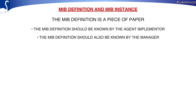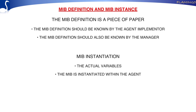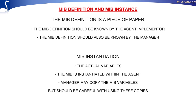The second term is the MIB instantiation — those are the actual variables. It's not the definition, but the thing that has values. The MIB instantiation is only available within the managed system, not in the manager system. If you change the variables, you change them in the managed system. The manager can have a copy of the MIB variables, but operating on that copy is dangerous — a local copy of uptime will be outdated, and doing a reset on the local copy has no effect.